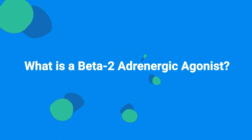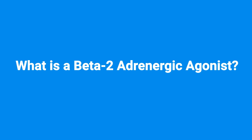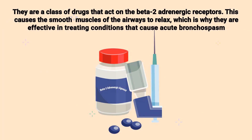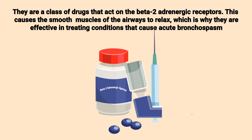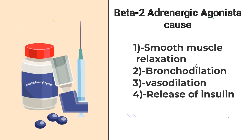First and foremost, what is a beta-2 adrenergic agonist? This is a class of medications that act on the beta-2 adrenergic receptors. This causes the smooth muscles of the airways to relax, which is why they are effective in treating conditions that cause acute bronchospasm. Beta-2 adrenergic agonists cause smooth muscle relaxation, bronchodilation, vasodilation, and the release of insulin.